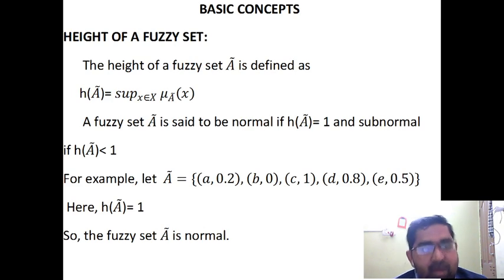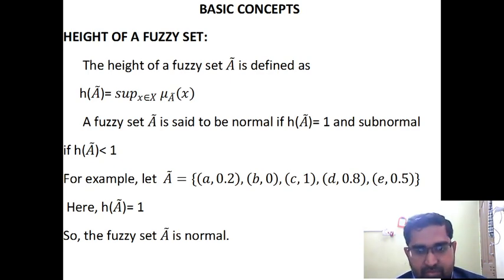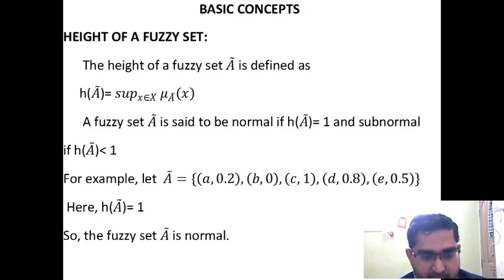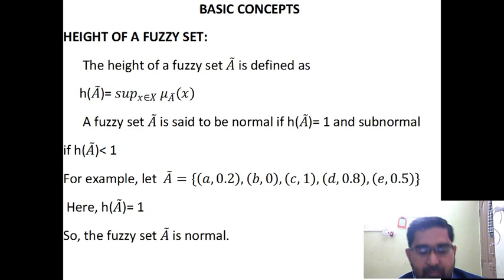Another terminology: the height of a Fuzzy Set — it is the supremum of all the membership values available in the Fuzzy Set. We say a Fuzzy Set is normal if its height equals 1. If the height is less than 1, we call the Fuzzy Set subnormal. For example, in Fuzzy Set A, the membership values are 0.2, 0, 1, 0.8, 0.5. The supremum is 1, so the height is 1, meaning the given Fuzzy Set A is normal.